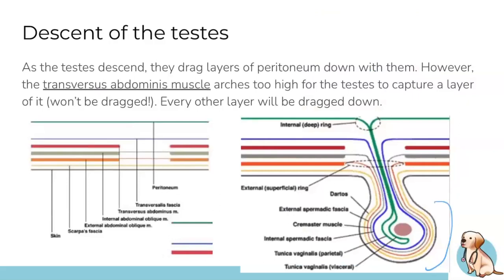The testes start off as retroperitoneal structures at the posterior abdominal wall. Even though they start on the posterior abdominal wall, they're also attached to the anterolateral abdominal wall by the gubernaculum, which pulls them down through the pelvis and ultimately into the scrotum via the inguinal canal. As the testes get pulled down through the canal, they are preceded by the processus vaginalis. As they descend, they grab muscle and fascial layers that they pass through, pulling those layers down into the canal and the spermatic cord.